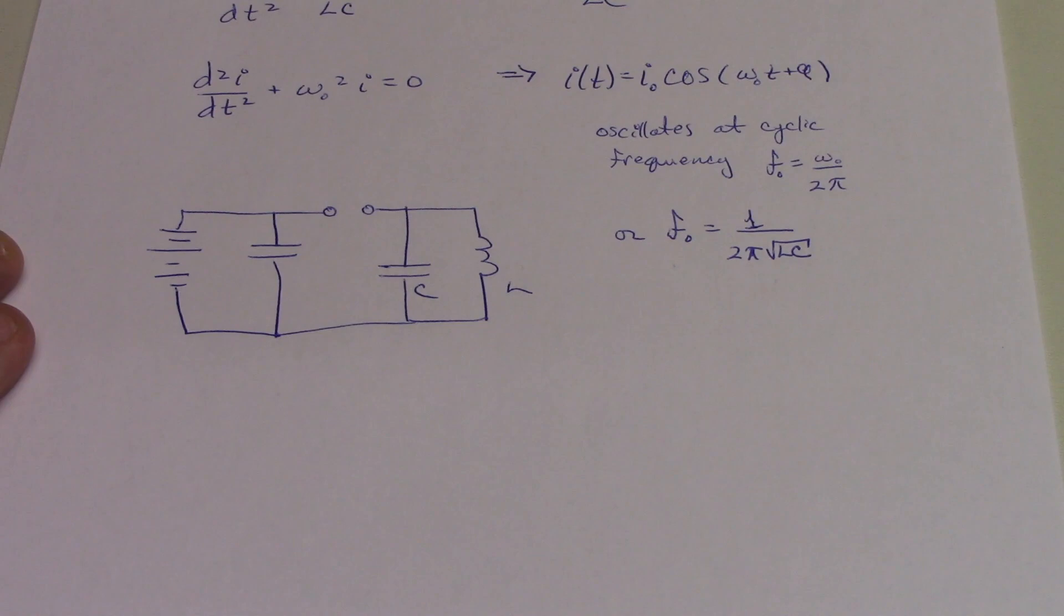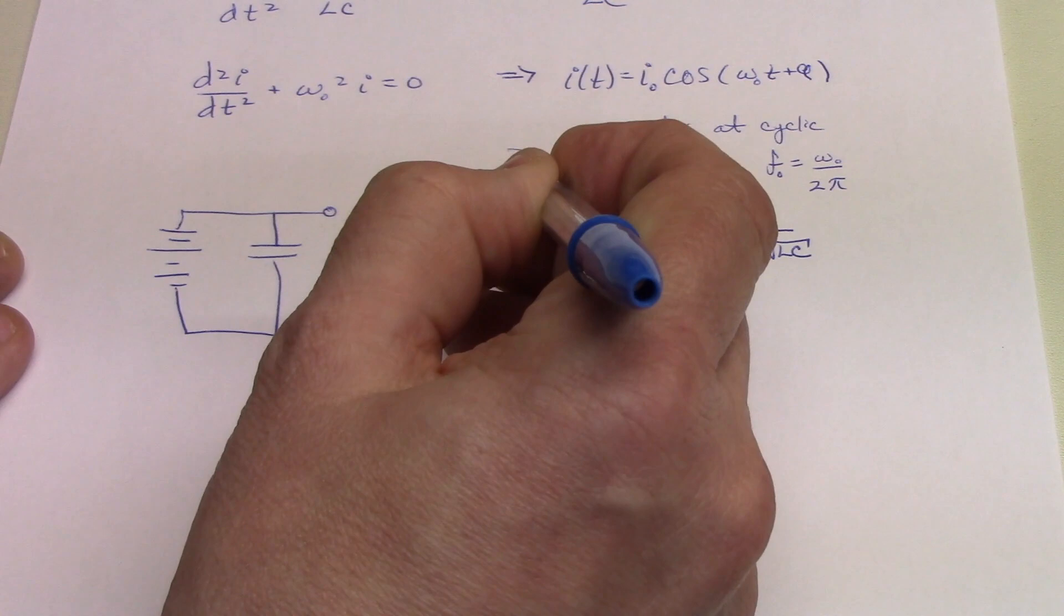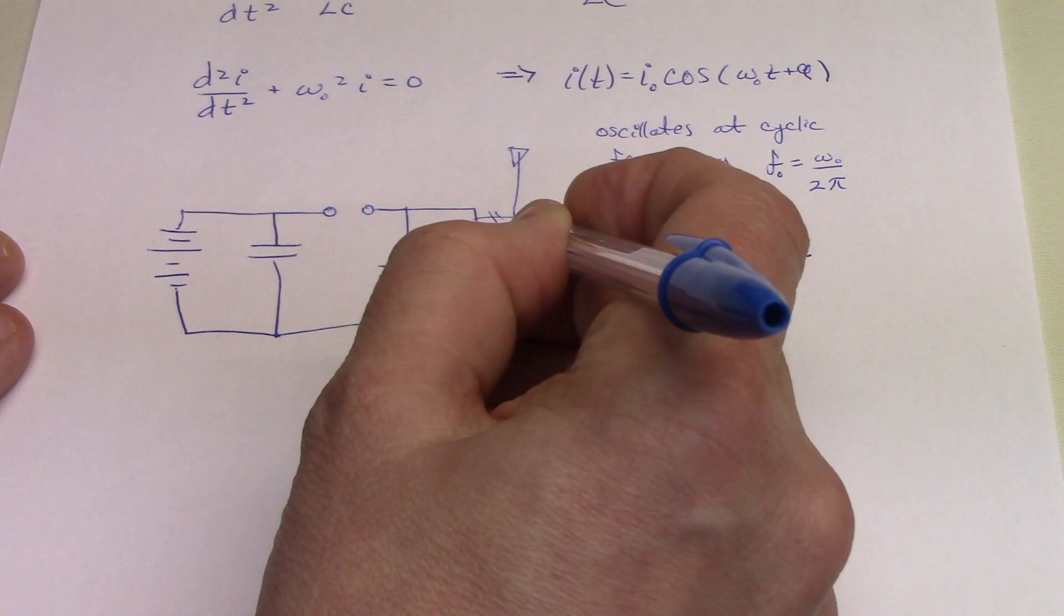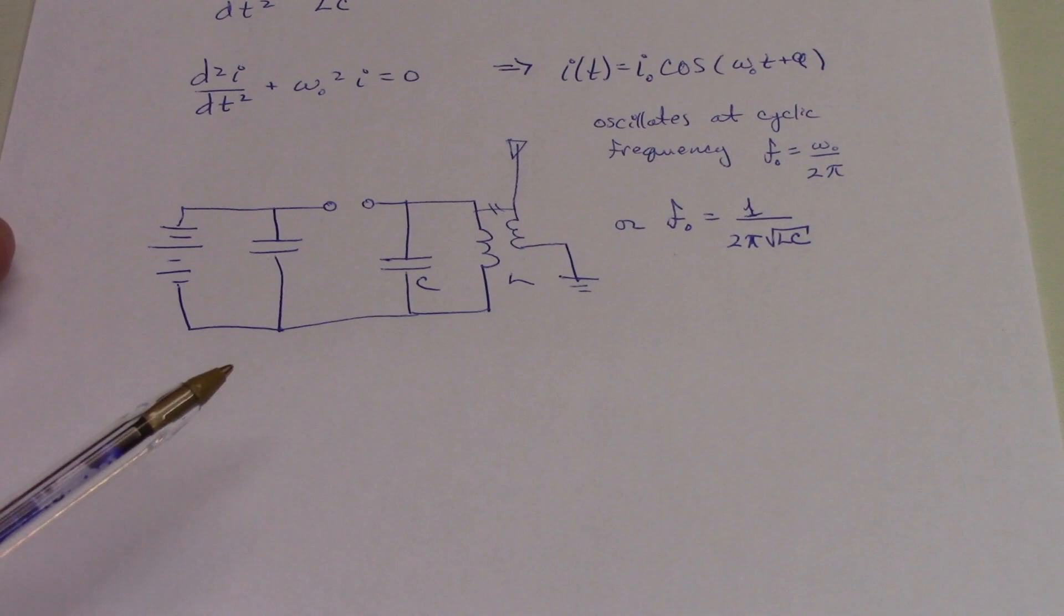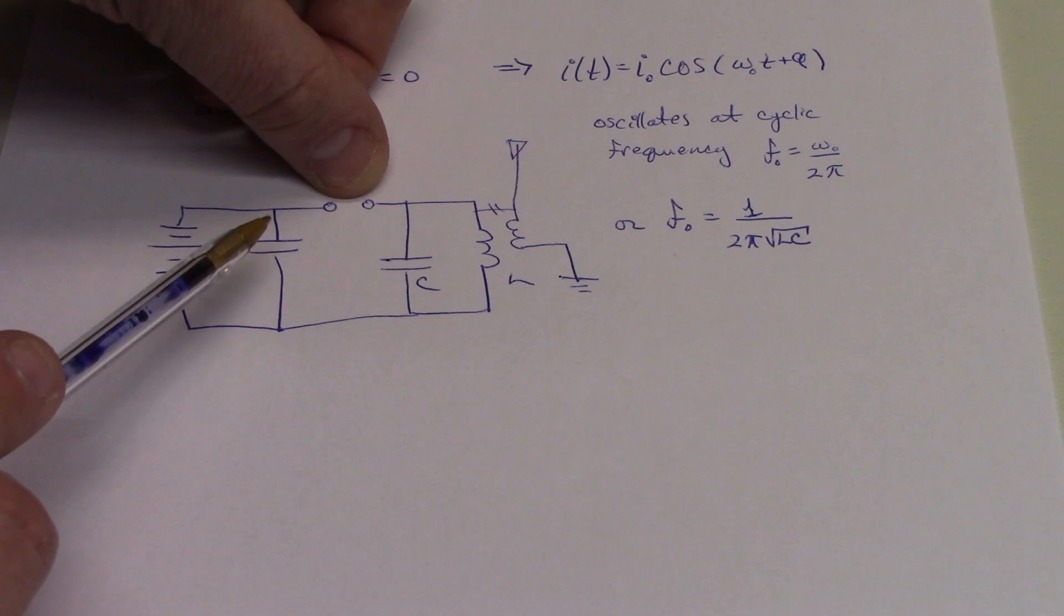Then, if we added a tank circuit like this, and we picked this L and C to give us a particular resonant frequency. If we could couple that then into an antenna, say like this, or maybe better than that, we had a coupling transformer to an antenna, what would that do?